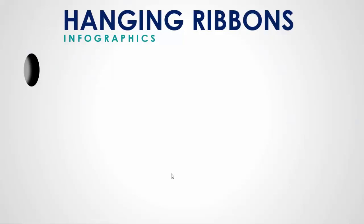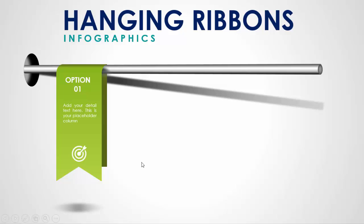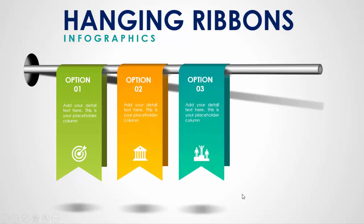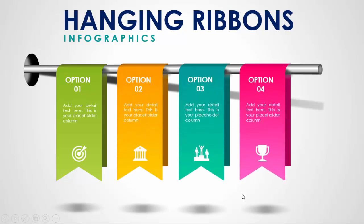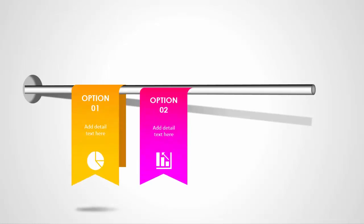In today's tutorial I'm going to show you a very creative infographic slide called the hanging ribbons. I have added a hole here and when I click, a pipe or rod comes out from the hole with a shadow effect. When I click it will show option one with details and the ribbon and shadow effect at the bottom, then the second, third, and fourth options. You can also create a version with three options only.